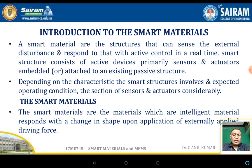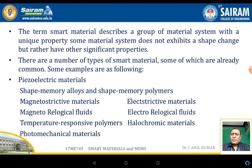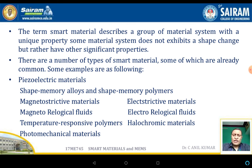Smart materials are intelligent materials that respond with a change in shape upon the application of an externally applied driving force. Examples include shape memory alloys and piezoelectric materials. Some material systems do not exhibit shape change but have other significant properties. Types of smart materials include: piezoelectric materials, shape memory alloys, shape memory polymers, magnetostrictive materials, electrostrictive materials, magnetorheological materials, electrorheological materials, thermal/temperature responsive polymers, holochromic materials, and photo-mechanical materials.